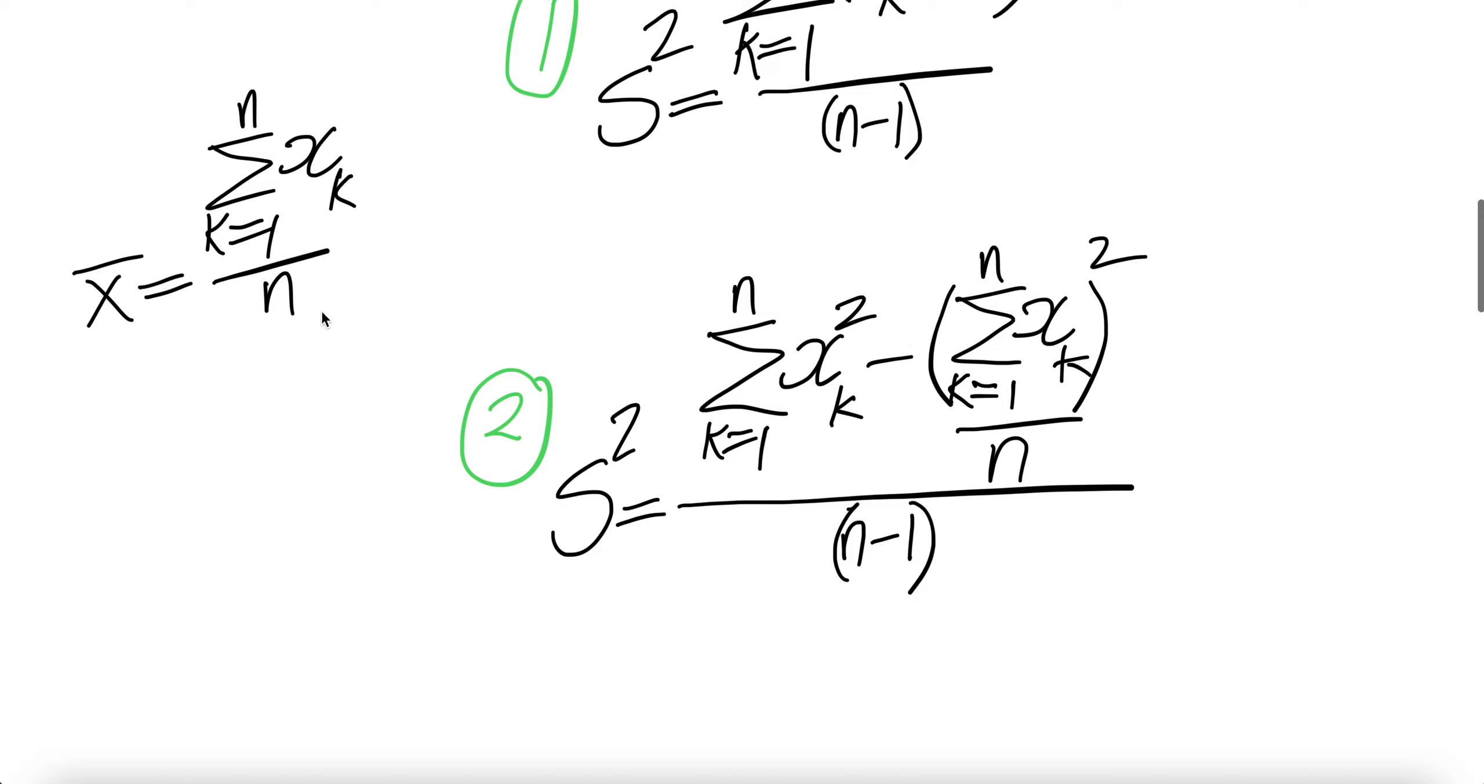Here, no need to do bar x. You just sum the individual observation. Here, you just square the given individual observation and then sum.